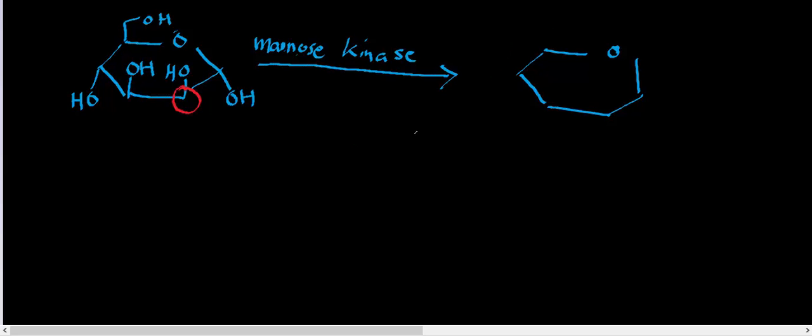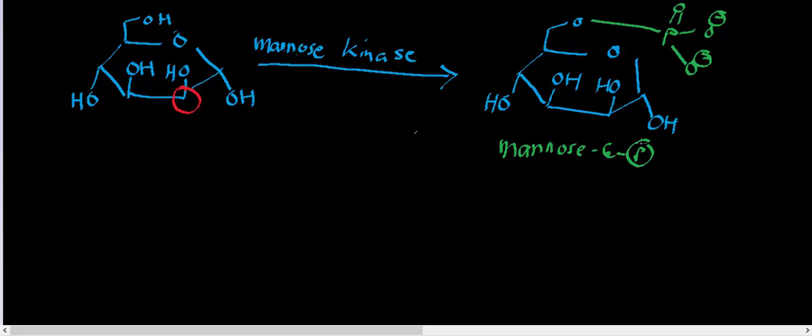But mannose is what they call an epimer of glucose, and that just means that it differs at the stereochemistry at one carbon. Now you have mannose 6-phosphate, so this right here is mannose 6-phosphate.